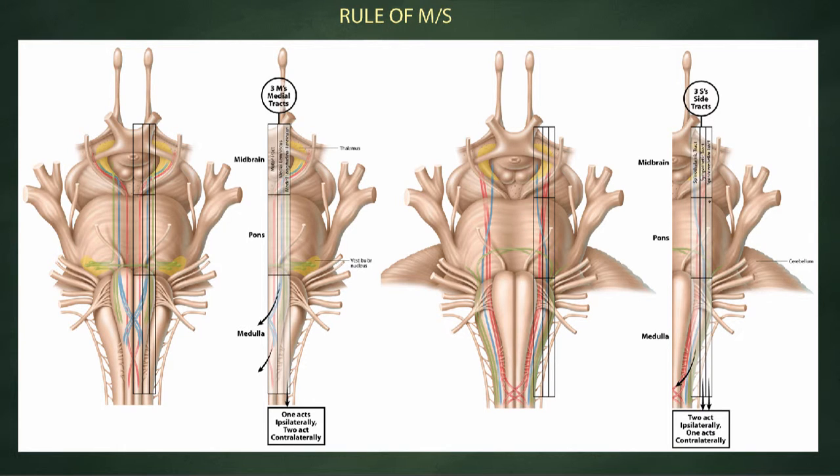So fairly simple, three medial tracts, three side tracts. Let's put that together with what we learned about the location of the nuclei. And that gives you a pretty good general overview of major pieces of brainstem neuroanatomy.